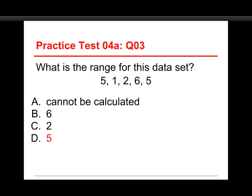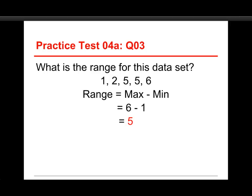When you want to answer a question about the range, the first thing you should do is put the numbers into order. So here I've rearranged them as one, two, five, five, six. And the formula for the range, you don't really need a formula, because all it is is the maximum score minus the minimum score. So in this case, that's six minus one, which gets us to five. So that's the range for the data.